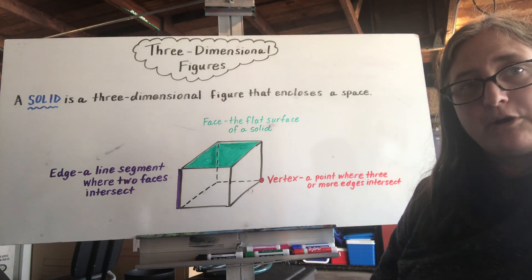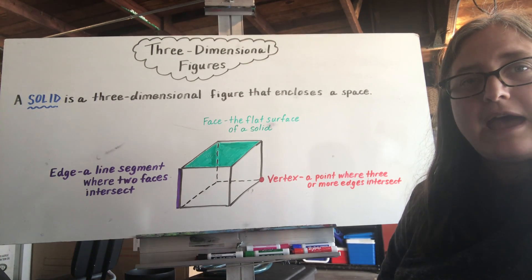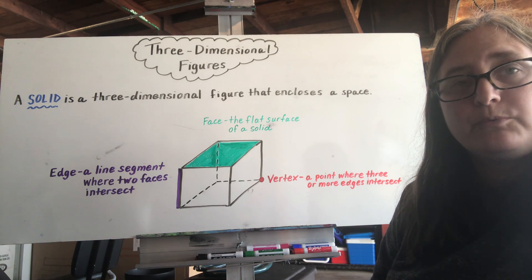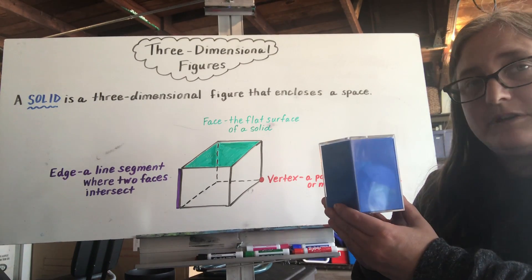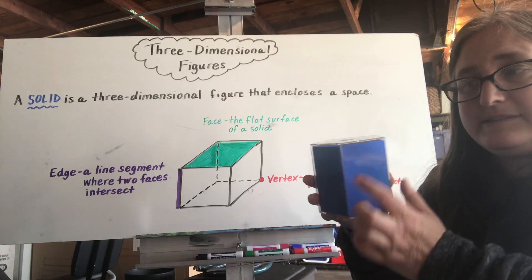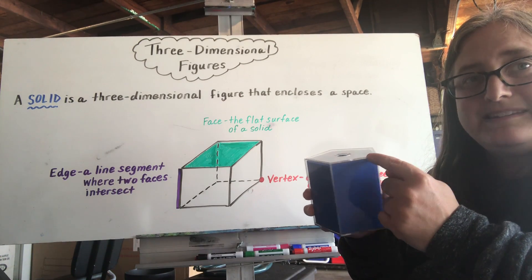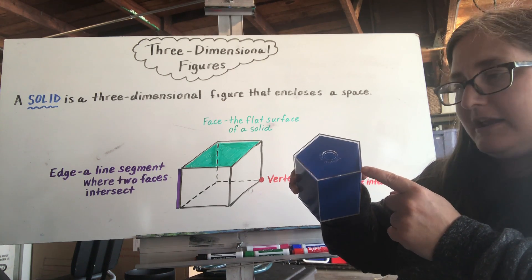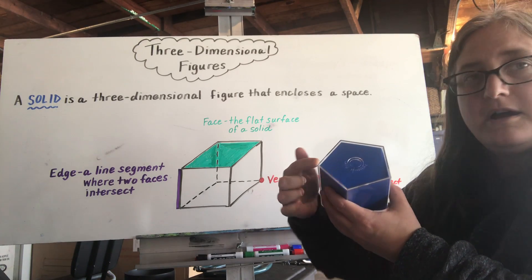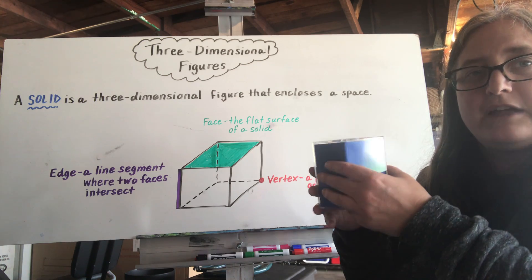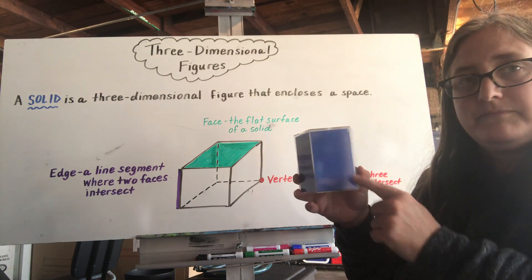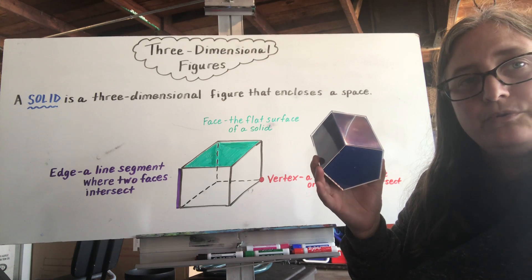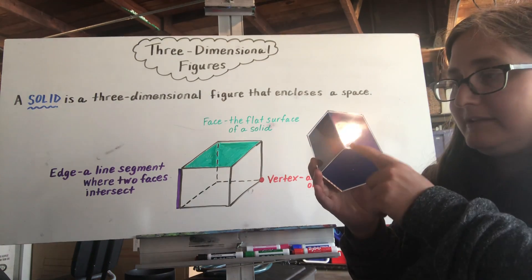Another characteristic we're going to talk about are edges. Edges are where you have more than one face coming together and intersecting — where they intersect, we have an edge. For example, on this three-dimensional figure, I've got my top piece and a side piece, and they come together right here. This line segment is an edge. I've got edges along the top, edges that connect the top piece to the bottom — those are vertical edges — and edges along the bottom of the shape. Anywhere where two faces come together and make a line segment, I have an edge.